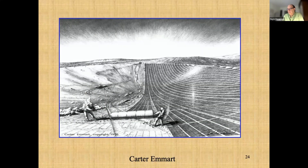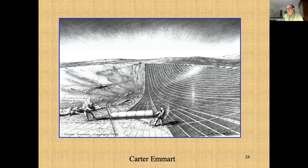Here's one concept of solar panels laid out in a smoothed-out crater forming a large concentrator. Solar power would be a big part of our energy source on the Moon, but it's only two weeks at a time, so we need advanced battery technologies to keep us powered during the night. Nuclear power will also be a part of our energy balance on the Moon, Mars, and certainly beyond.